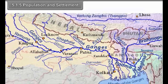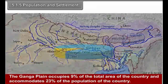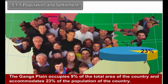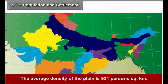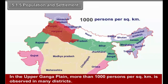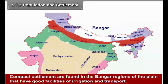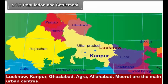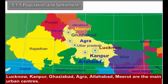5.1.5 Population and Settlement. The Ganga Plain occupies 9% of the total area of the country and accommodates 23% of the population. The average density of the plain is 931 persons per square kilometer. In the upper Ganga Plain, more than 1000 persons per square kilometer is observed in many districts. Compact settlements are found in the Bhangar regions of the plain that have good facilities of irrigation and transport. Lucknow, Kanpur, Ghaziabad, Agra, Allahabad and Meerut are the main urban centers. Agra is a historical city.